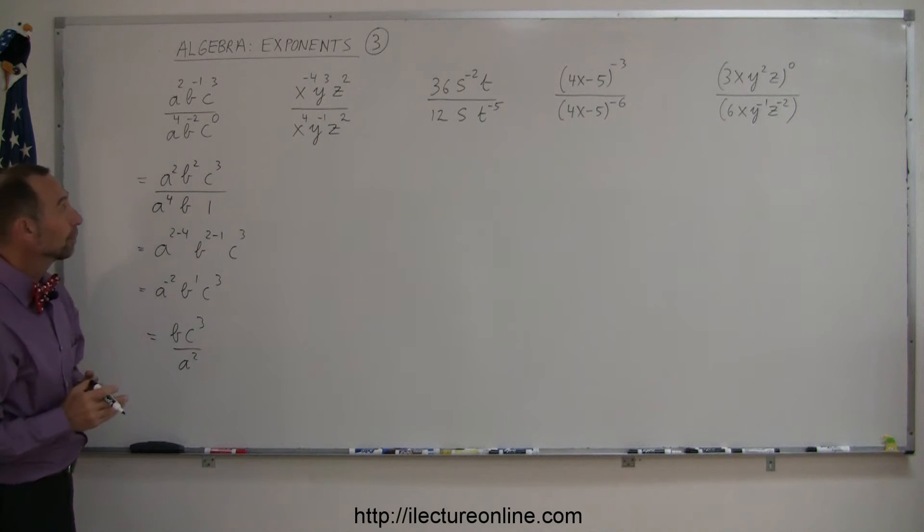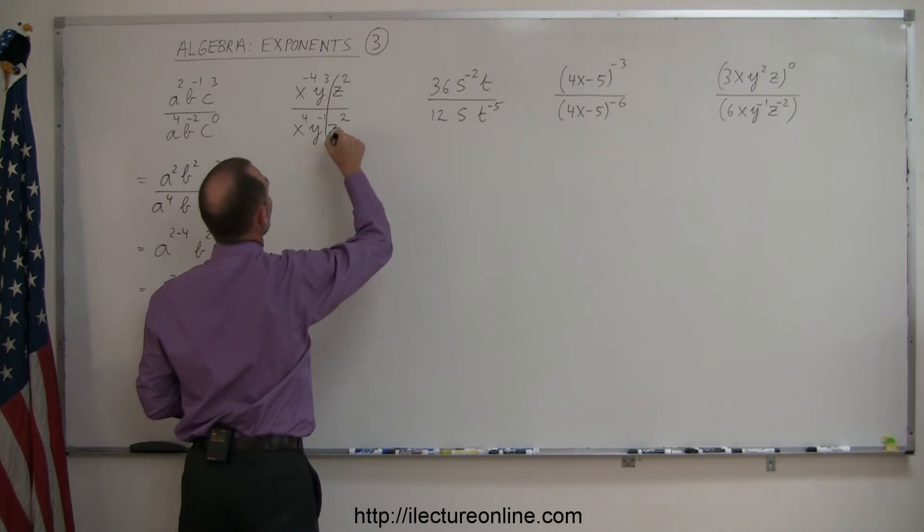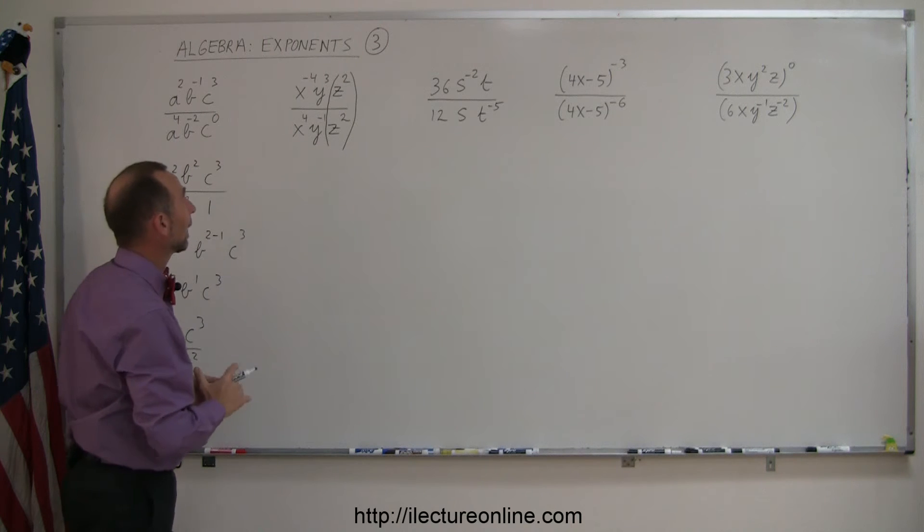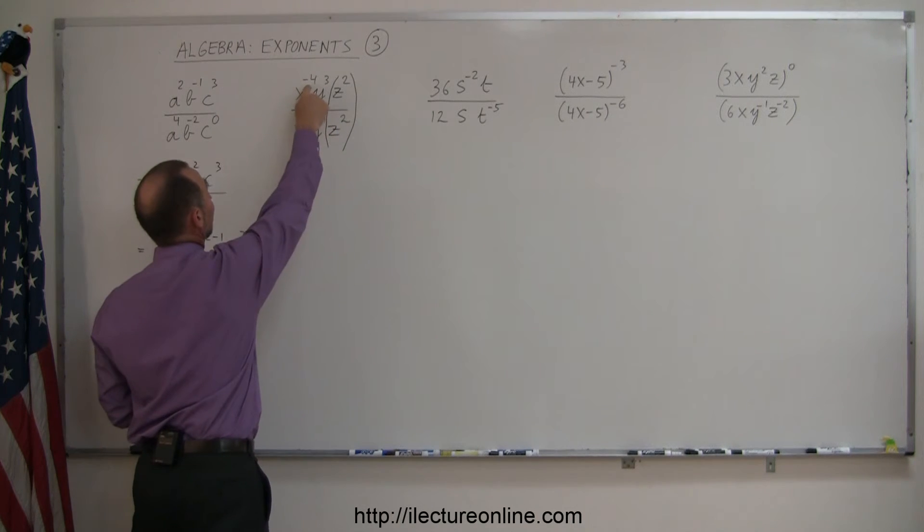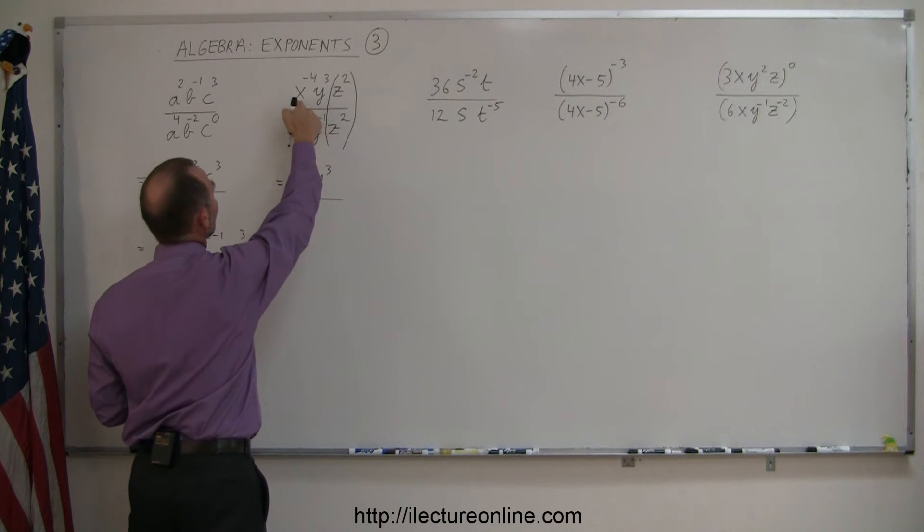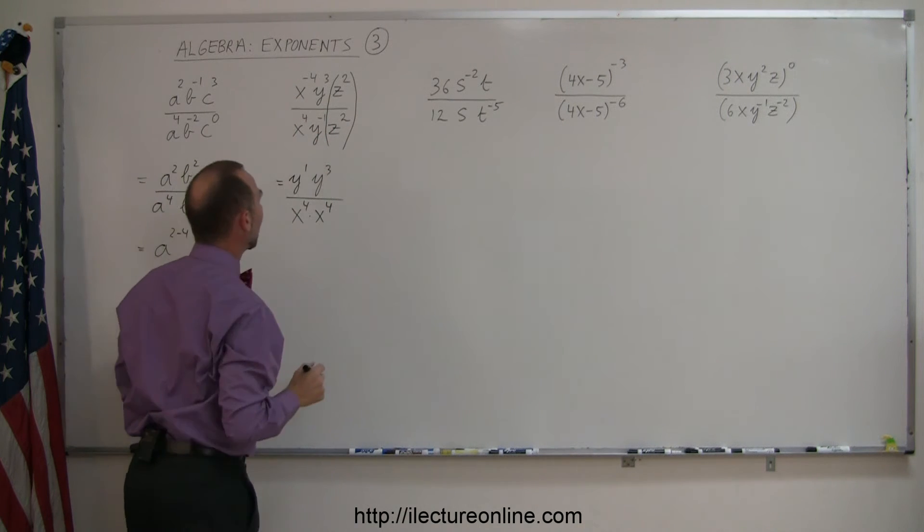Looking at our next example, right away I see z squared divided by z squared. And I can say, all right, that's simply equal to 1, so I can just eliminate that. I still have a negative exponent here and a negative exponent there, so I'm going to move those. So this can be written as y cubed divided by x to the fourth power. And then I can move this one down, so this becomes times x to the positive fourth power. Move this one up, so this becomes y to the positive one power.